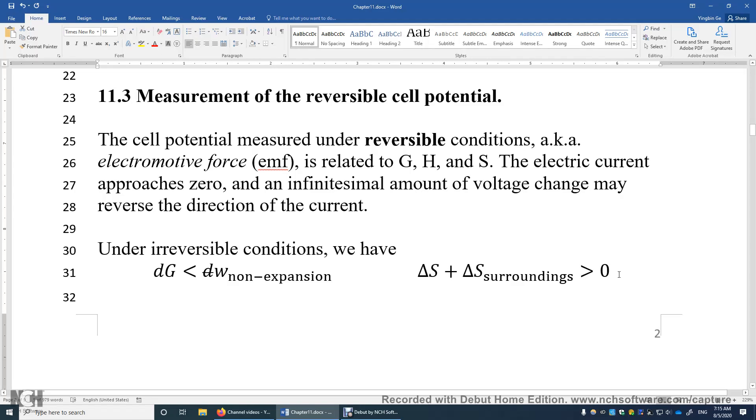Section 11.3: Measurement of the Reversible Cell Potential. The cell potential measured under reversible conditions is called electromotive force, and this electromotive force is related to the Gibbs energy change of the reaction.